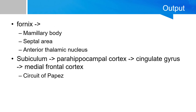To summarize the major output tracks: the fornix goes to the mammillary bodies via the post-commissural column, to the septal area via the pre-commissural column, and sends a small branch to the anterior thalamic nucleus. The subiculum is the major cortical output track, directly continuous with the parahippocampal cortex, which is then continuous with the cingulate gyrus and the medial frontal cortex in the septal area. This is part of the circuit of Papez and the limbic system.